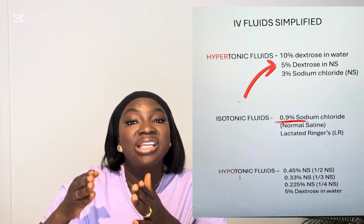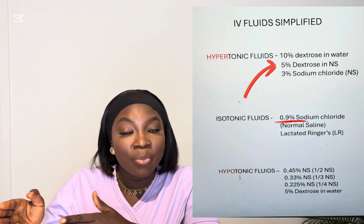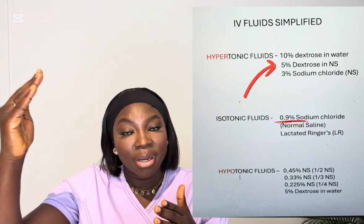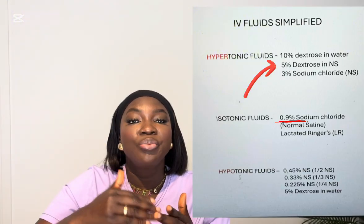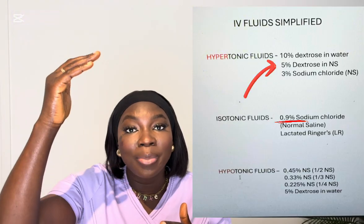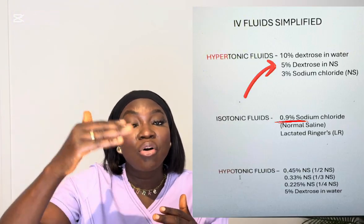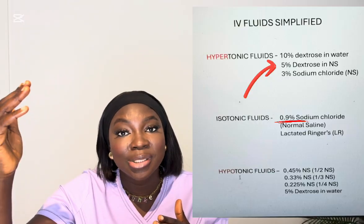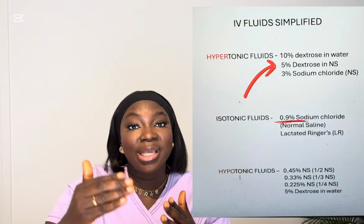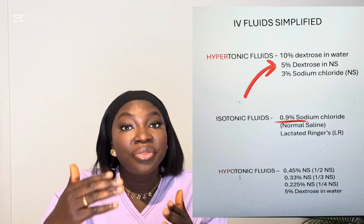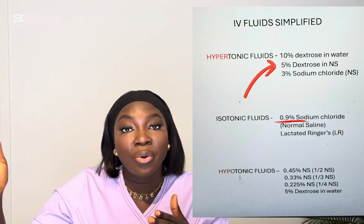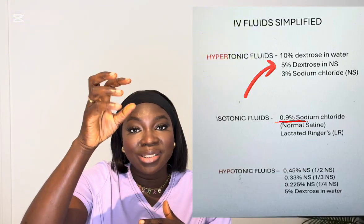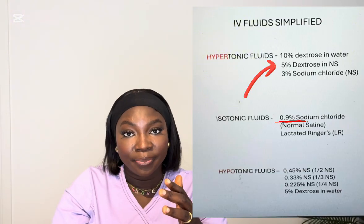If you have hypertonic fluids, the number before the IV fluid name will be greater than 0.9 — as the name implies, hyper means higher numbers. Examples of hypertonic fluids include 10% dextrose in water, 5% dextrose in normal saline, and 3% sodium chloride. You can see those numbers are all greater than 0.9.